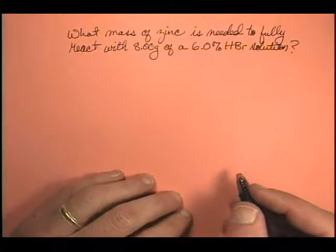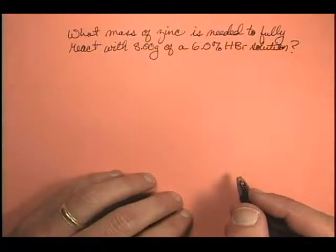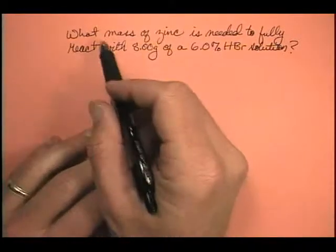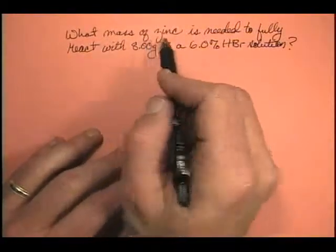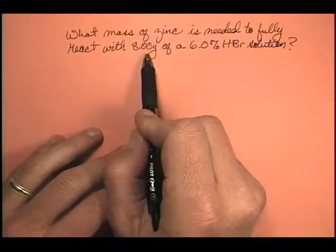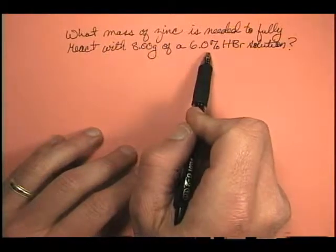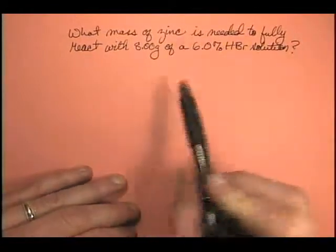Alright, let's combine a few concepts from a couple of different chapters, several actually, many. What mass of zinc, we're going to do mass in grams, what mass of zinc is needed to fully react with 8.00 grams of a 6.0% by mass hydrobromic acid solution.